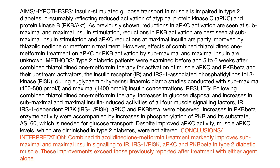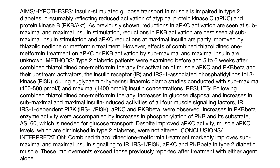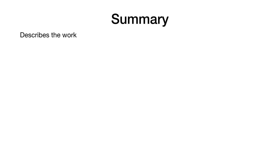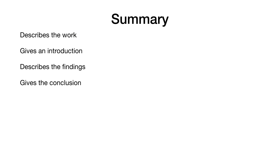As you can see there is a very defined structure to the abstract. In summary, when you're writing an abstract it should describe the work. It should have an introduction — just a couple of sentences at the beginning. You should describe your findings, again a couple of sentences, and you should give your conclusions to the work, again a couple of sentences or so.